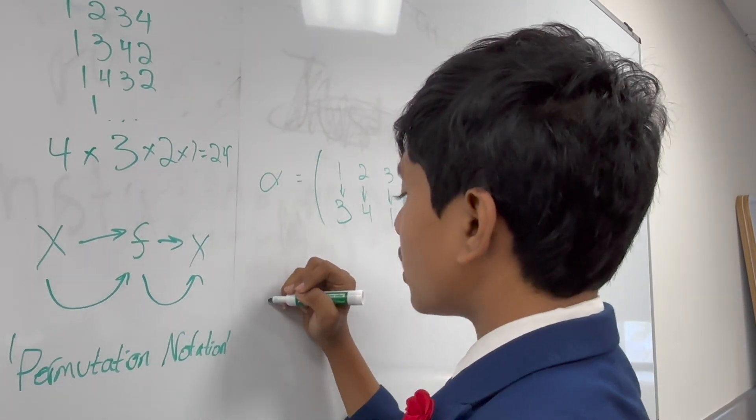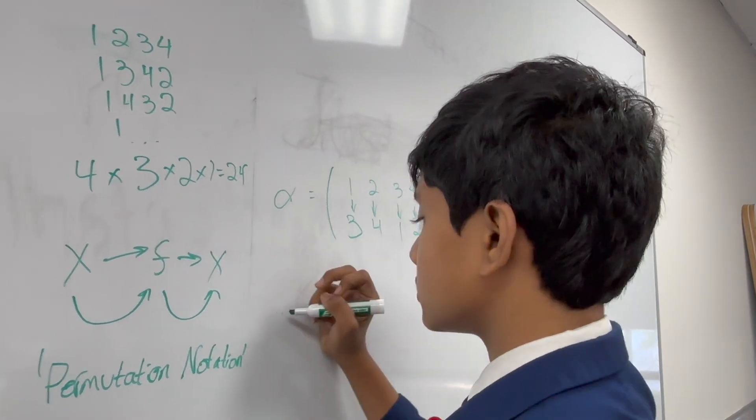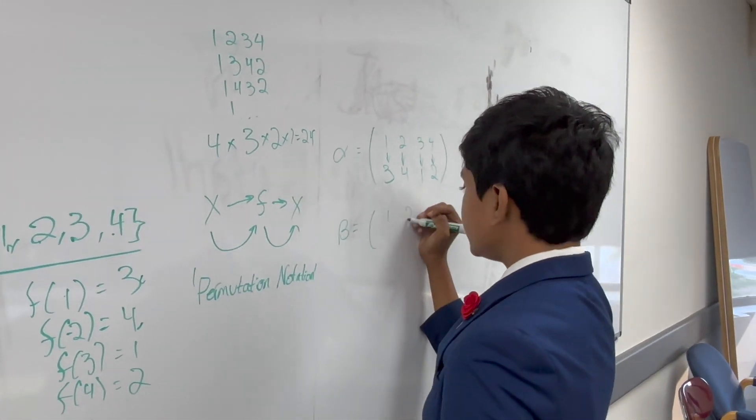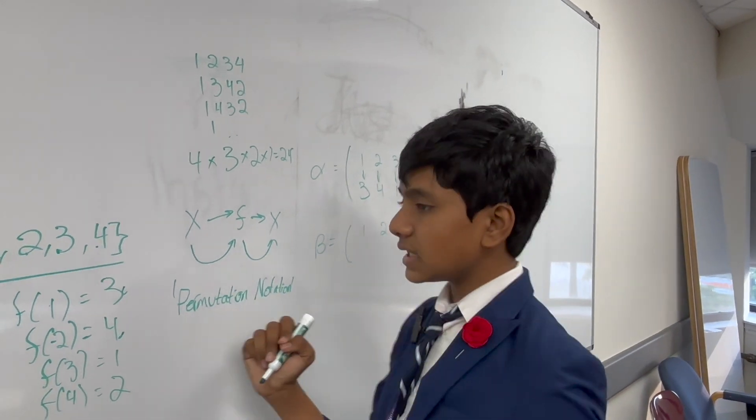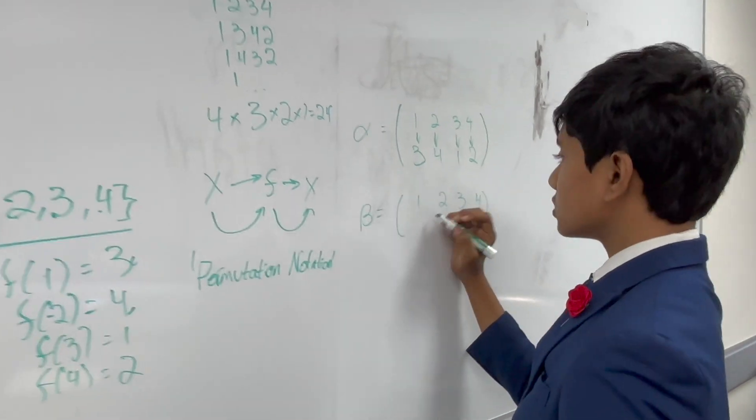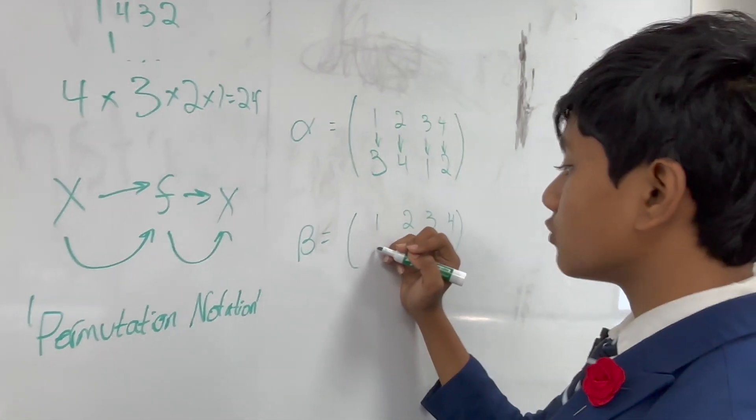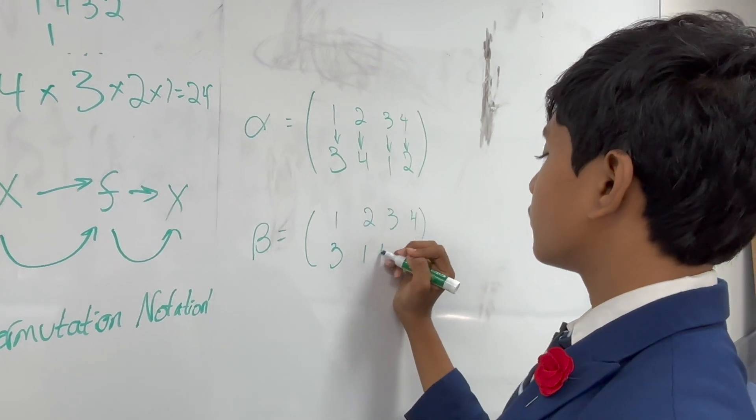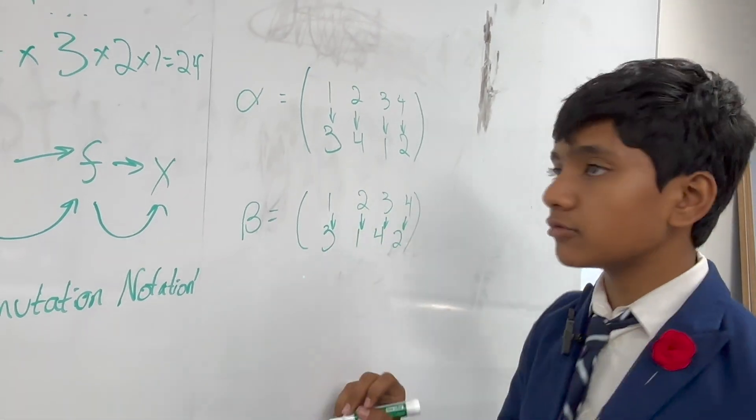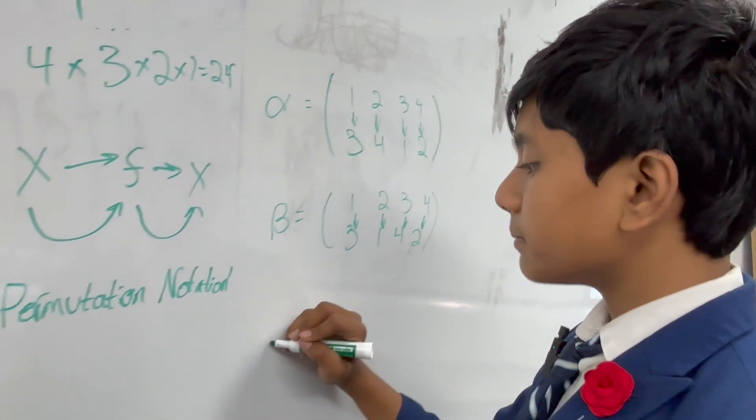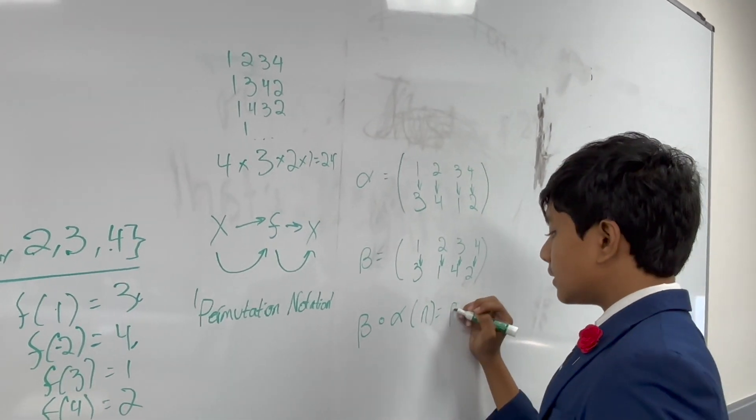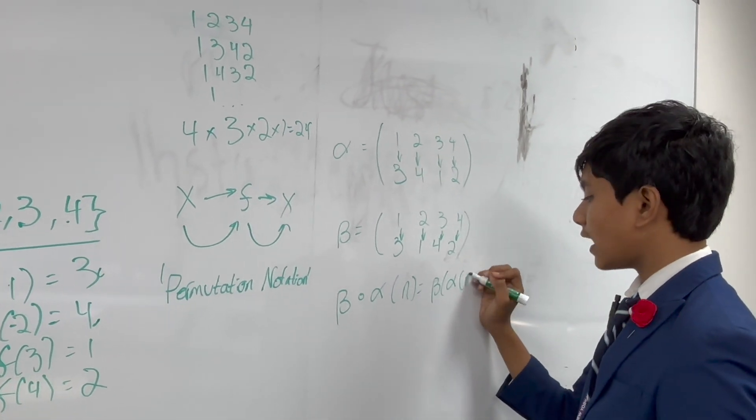Now, let's say we want to compose two of these functions. What would that look like? Well, two of these permutations, so to speak. Well, beta would have to be something on the same set that maps to the same set for them to be composable. So, let's say we've got a different one this time, like 3, 1, 4, 2. Then, how would we compose them? Well, the composition beta dot alpha of any number would just be beta of alpha of n.